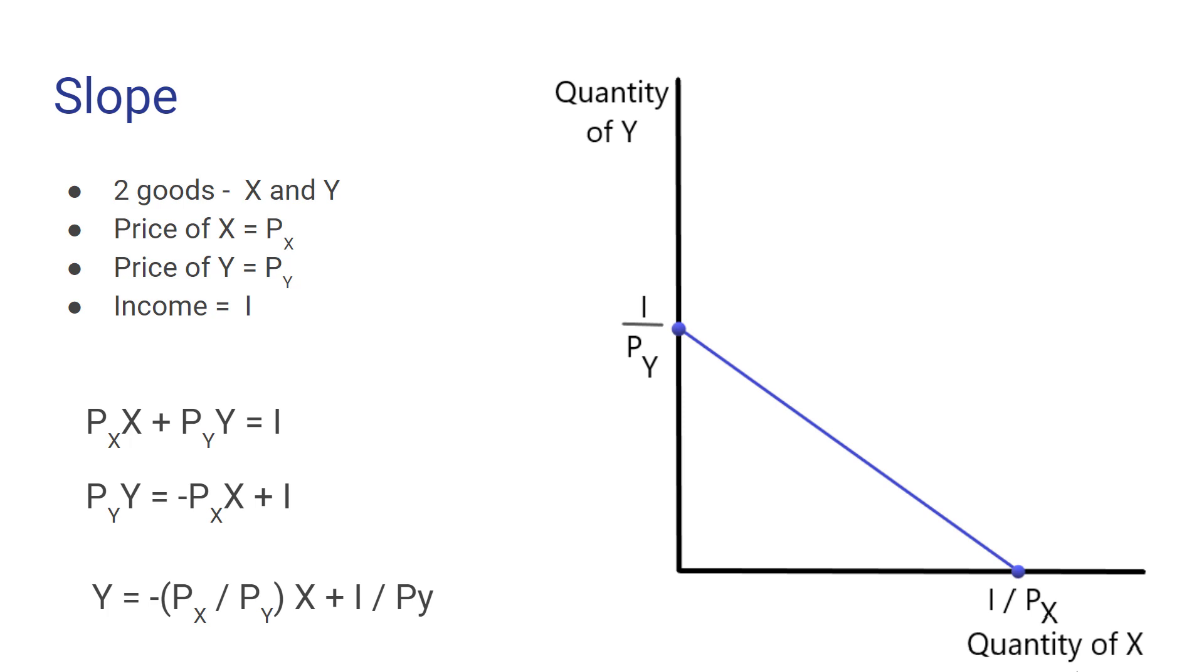So we now have it in the slope-intercept form where Y equals mx plus b. The slope, or that m term, is equal to the negative of the price of good X over the price of good Y, which we can just note will always be, in this two-good case, the ratio of the negative of the price of the good on the horizontal axis divided by the price of the good on the vertical axis. The intercept matches what we've already computed, which is income over the price of good Y on the vertical axis. And we already have established the intercept on the horizontal axis. So that all matches up quite nicely.